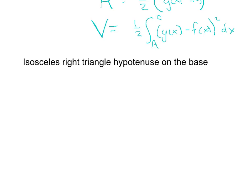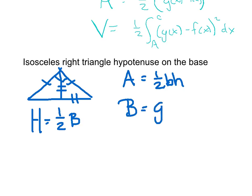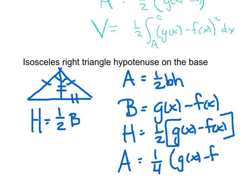Isosceles right triangle, hypotenuse on the base. I think you're crazy if you don't sketch it — the sketch makes the ratio obvious. There's my right, those two sides are equal, and when I draw in my height, the height is equal to half the base. So there's my ratio: height equals half of the base. Starting with area — still one-half base times height. My base is still g of x minus f of x. My height is one-half of g of x minus f of x. So the area formula gives you one-fourth times the quantity g of x minus f of x squared.